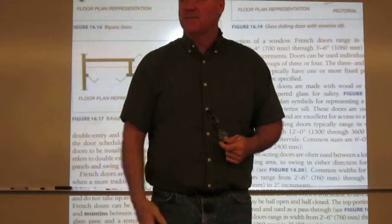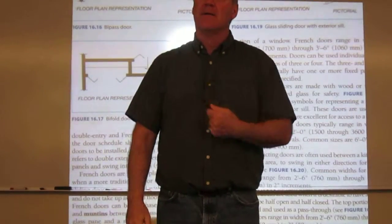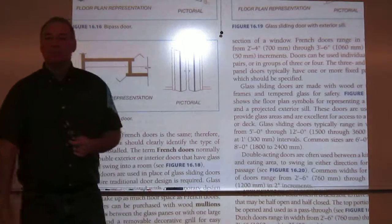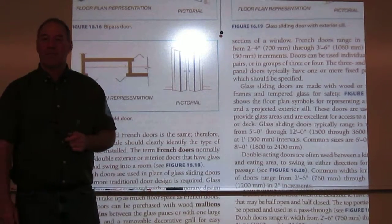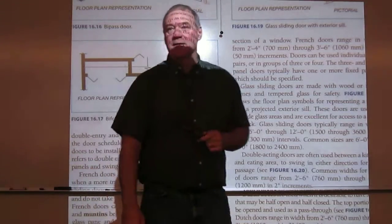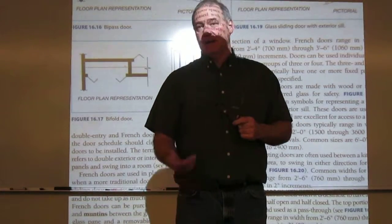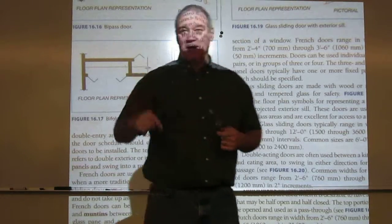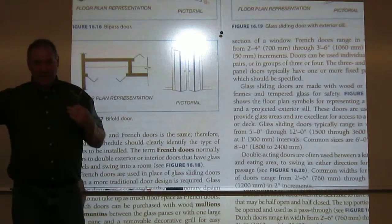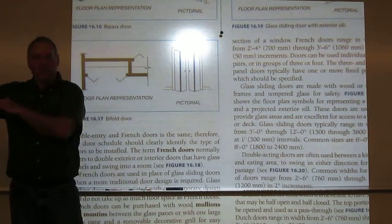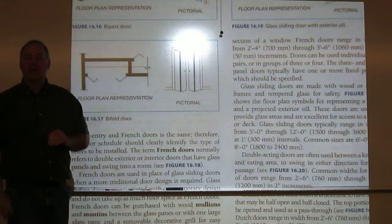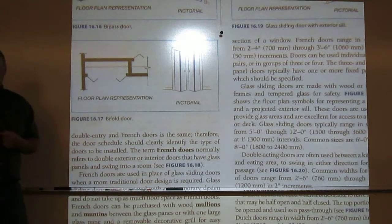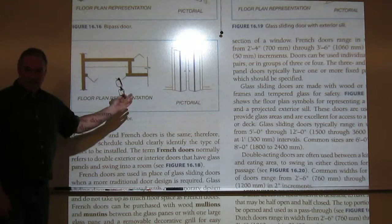Accordion doors are a totally different thing — they only open one way and go like two inches at a time. I'd draw those true size to the true width and show the edge as jagged since they don't change shape, they just slide against the wall. You won't see accordion doors much in residential — you'll see a lot in commercial, like gyms and churches where they're trying to break up spaces.